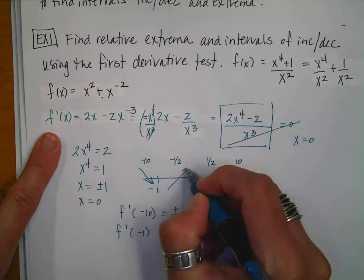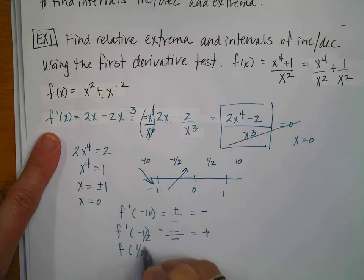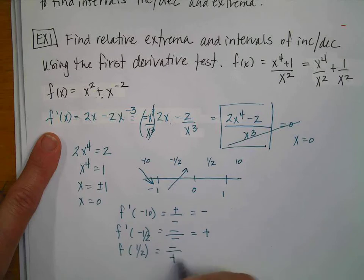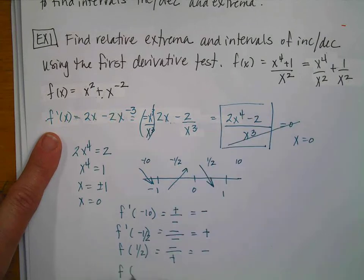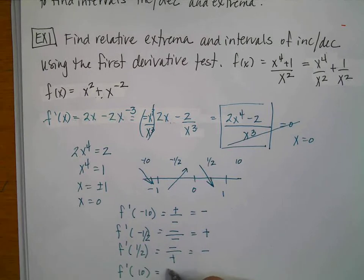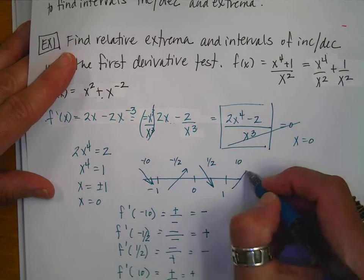I initially said negative divided by negative is negative, but that's a mistake — it's actually a positive. That zero was the issue. For f' at positive one-half, I get a negative numerator over a positive denominator, so this interval is decreasing. Then evaluating at 10, I get a positive divided by a positive, which is positive — increasing.